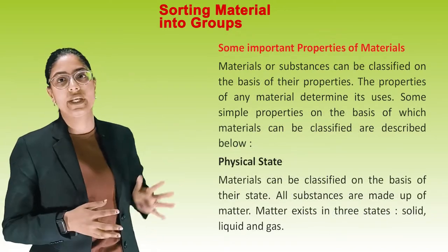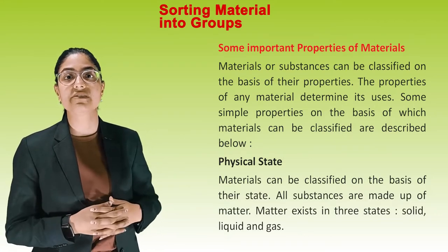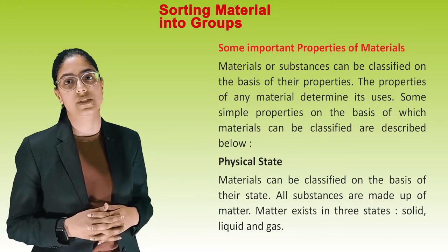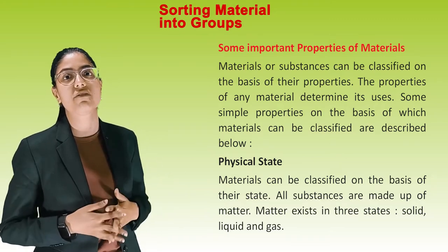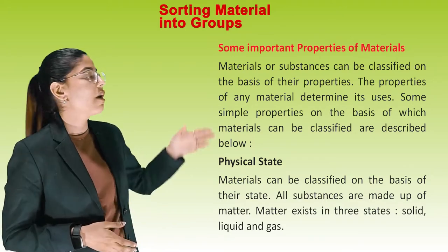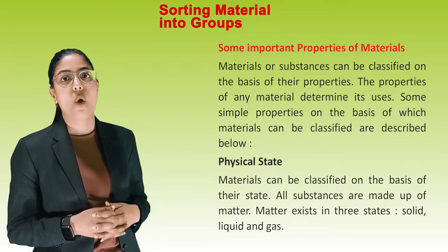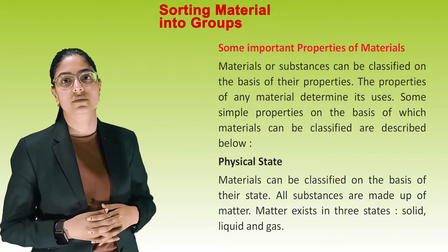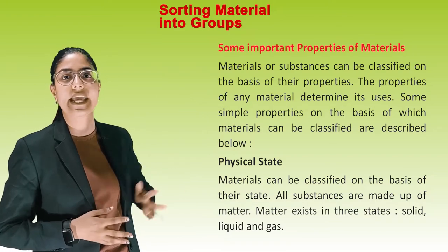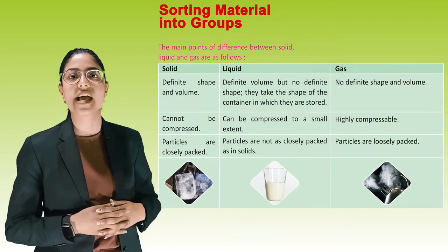Materials are substances that can be classified on the basis of their properties. The properties of any material determine its uses. Physical state is one such property. Materials can be classified on the basis of their state. All substances are made up of matter, and matter exists in three states: solid, liquid, and gas. The main points of difference between solid, liquid, and gas are as follows.